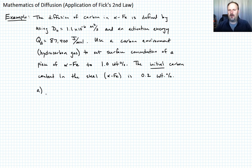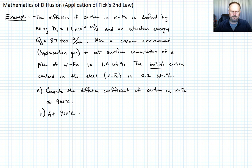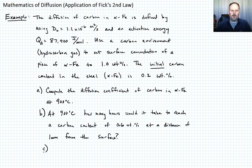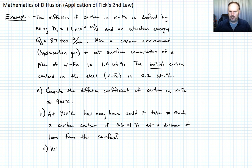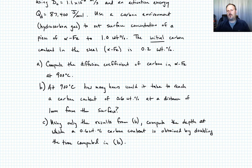I'm going to ask three questions. First, compute the diffusion coefficient of carbon in alpha iron at 900°C. Part B: at 900°C, how many hours would it take to reach a carbon content of 0.6 weight percent at a distance of one millimeter from the surface? Finally, part C: using only the results from part B, what is the depth at which we have 0.6 weight percent carbon if we double the time computed in B?